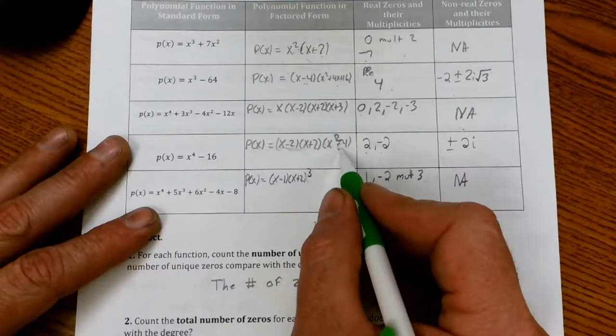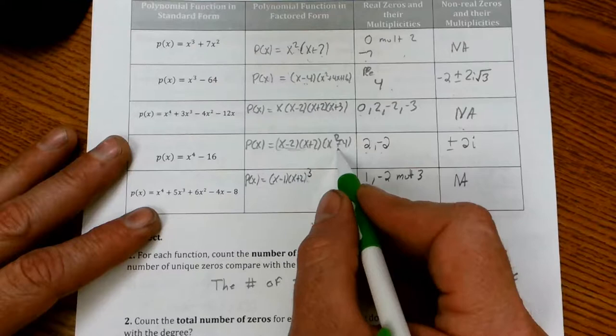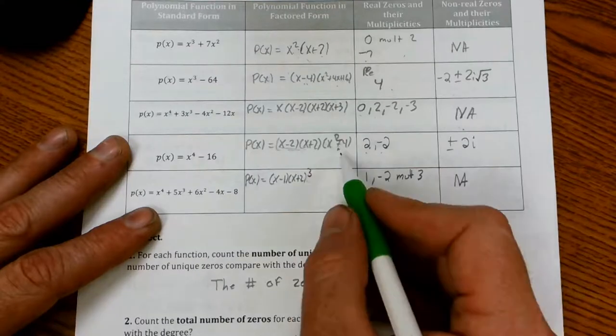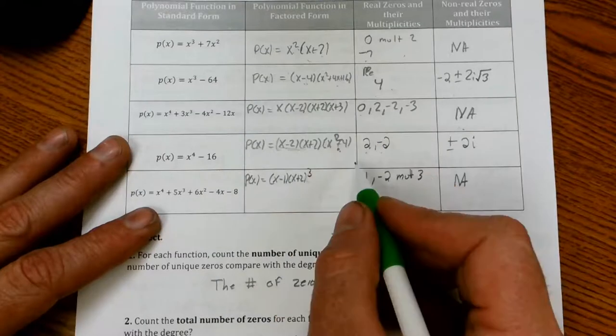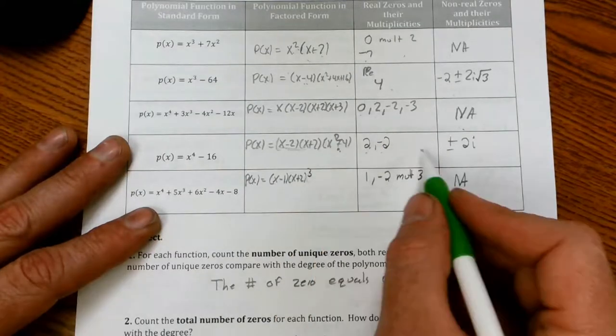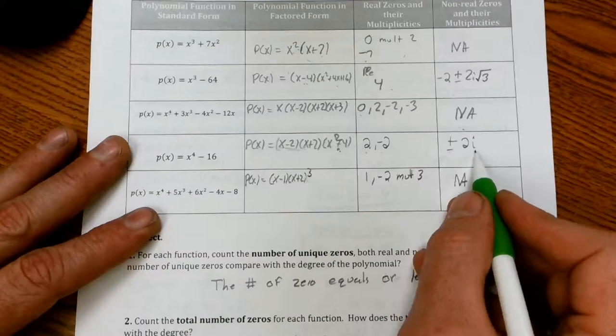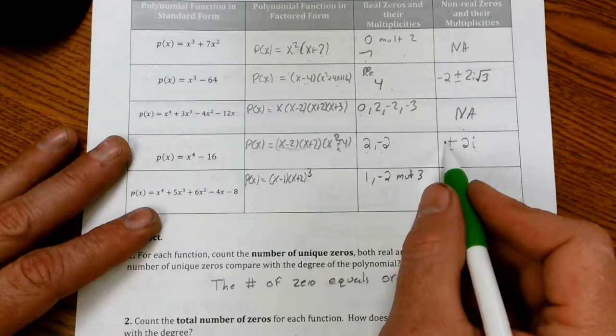On this one we broke it down. We had these two that were real which we listed here, two and negative two, and then we had two imaginary on the other side. We set this equal to zero and did quadratic formula up here. So look, two real and plus or minus gives me two imaginary, positive two i and negative two i, for a total of four again.